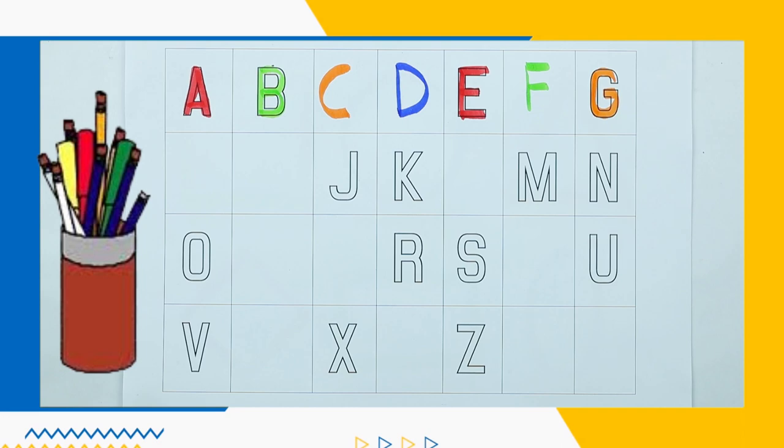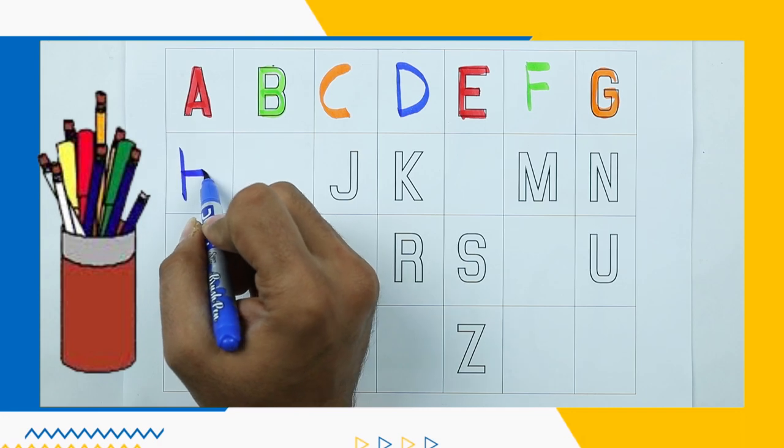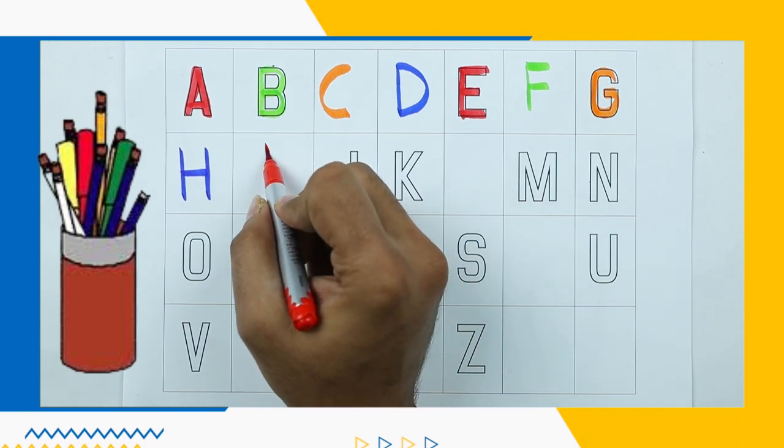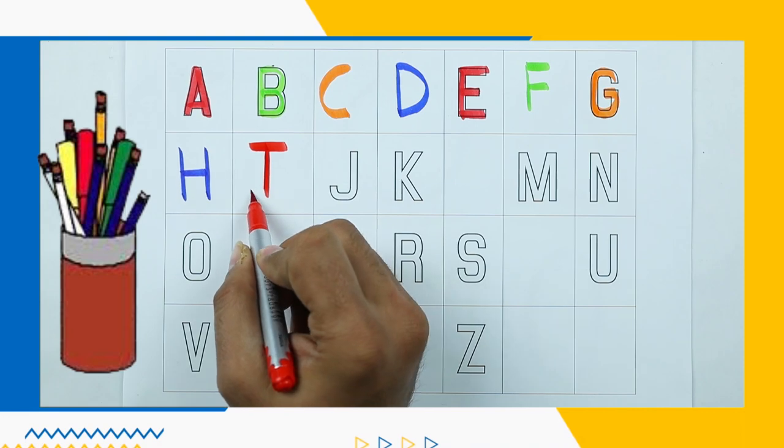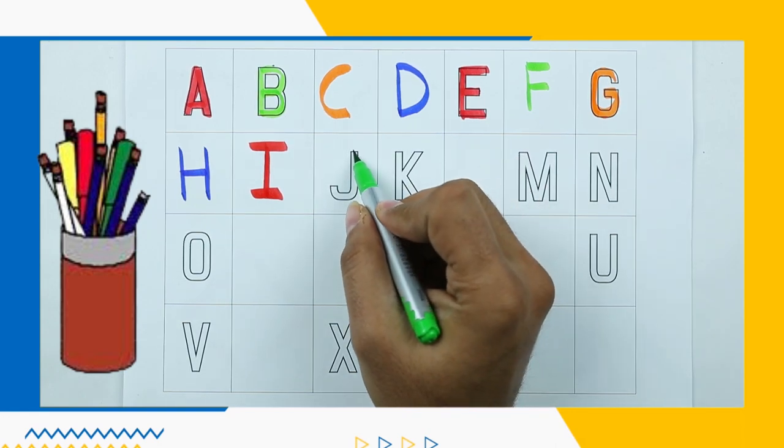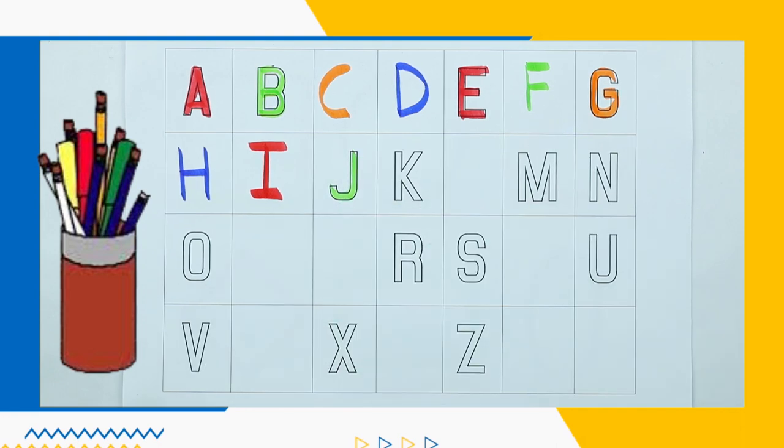What's next? Tell me. Yes, right. It's H. H for hand. What next? Next is I. Very good. I for ice cream. And J. J for jug with green color.